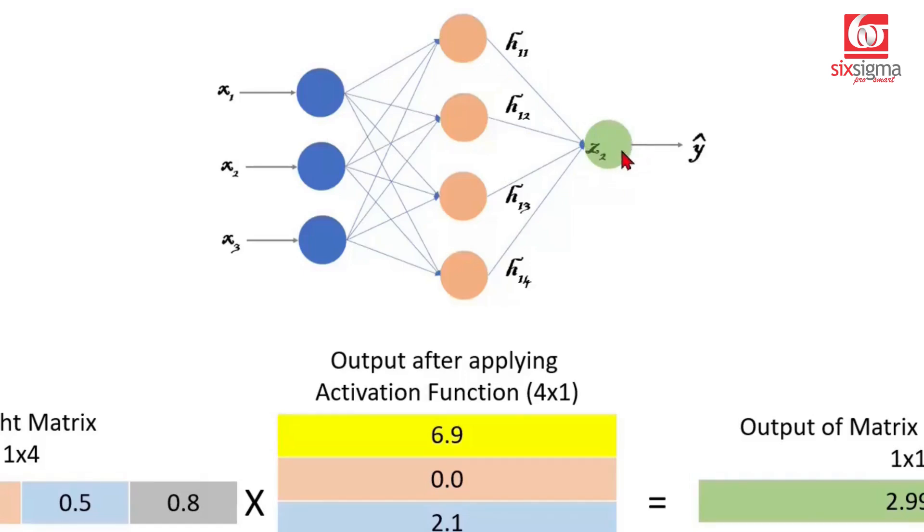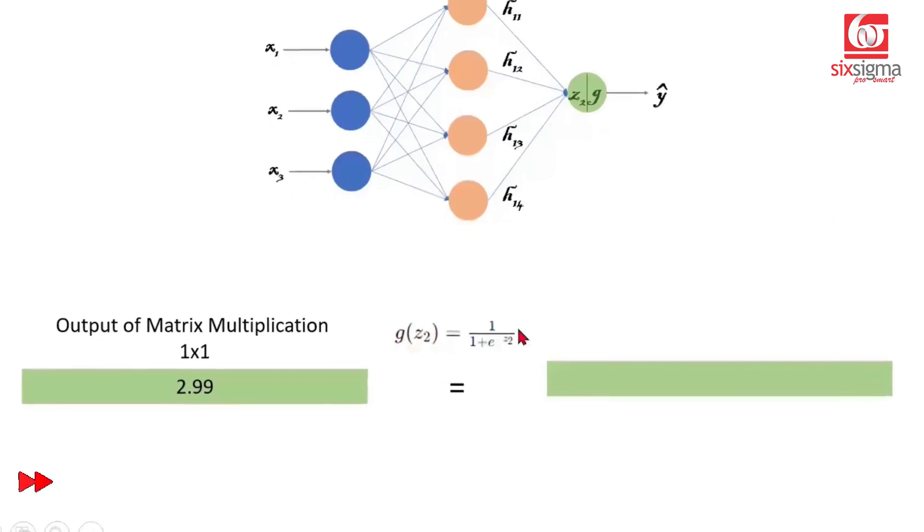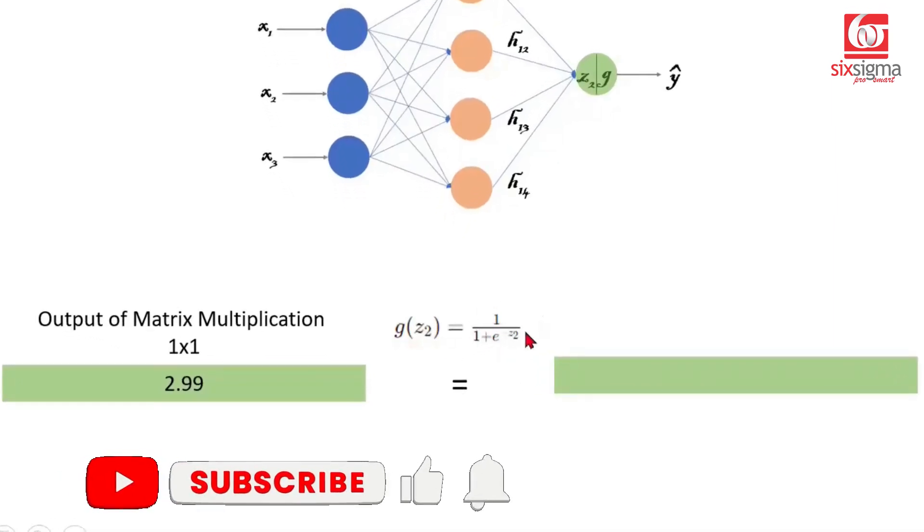This undergoes another activation. In this case, a sigmoid function because we are solving a binary classification problem. So let's bring the activation function, which is let's say G. And this is nothing but a sigmoid. Sigmoid is 1 over 1 plus e raised to the power negative Z2. So if we put this value of 2.99 in place of Z2, you'll get this value as 0.95.